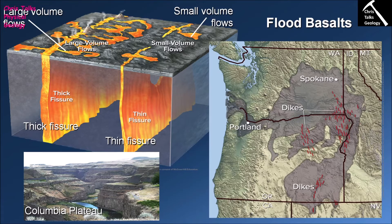The thicker the lava flow, the longer it takes to cool. Because we are dealing with a mafic lava which has quite a low viscosity, it is able to flow quite quickly. This means that thick enough lava flows can cover absolutely huge distances. For instance, there is one lava flow that managed to travel all the way from Spokane to the Pacific Coast in about one month — an average speed of about half a mile an hour, which is pretty fast for a lava flow. These flows were very, very thick, which allowed them to retain enough heat to travel these huge distances.